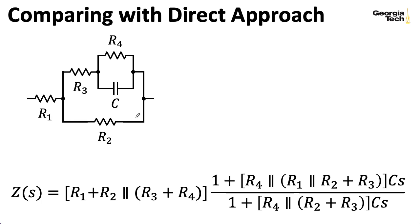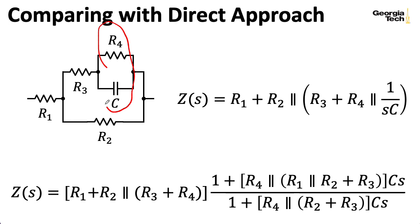Now, if I were to compute this in a more straightforward way, I would have R4 in parallel with the impedance of the capacitor, which is just 1 over SC. That is in series with R3. That is in parallel with R2. And then we would just add the R1 in series. So you can take this, do a bunch of algebra on it, and make it look like that. But it is extremely painful to do so.